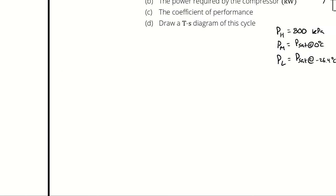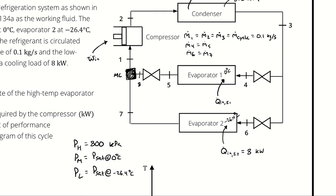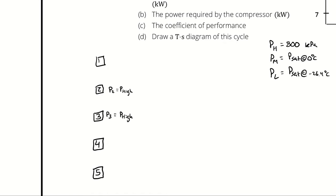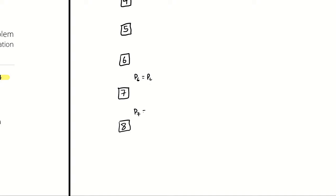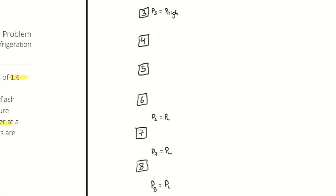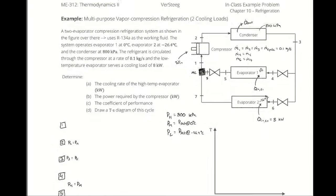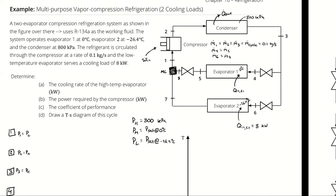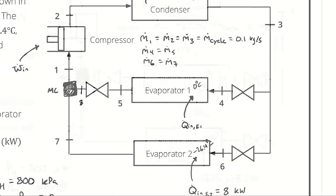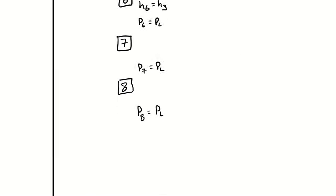Now let's start parsing out state point properties. States 2 and 3 are at the high pressure — after the compressor but before any expansion. The condenser is isobaric. We then go through one expansion valve to the intermediate pressure at states 4 and 5, and are expanded down to the low pressure at state 8. State 3 is also expanded to the low pressure directly for states 6 and 7. States 6, 7, 8, and 1 are all at the low pressure. For isentropic and isenthalpic processes: 1 to 2 is isentropic; 3 to 4 and 3 to 6 are isenthalpic; 5 to 8 is isenthalpic.